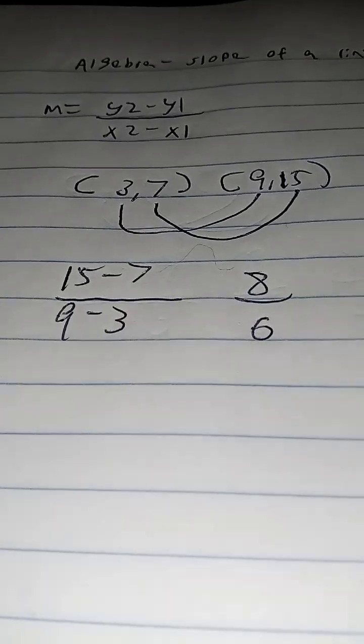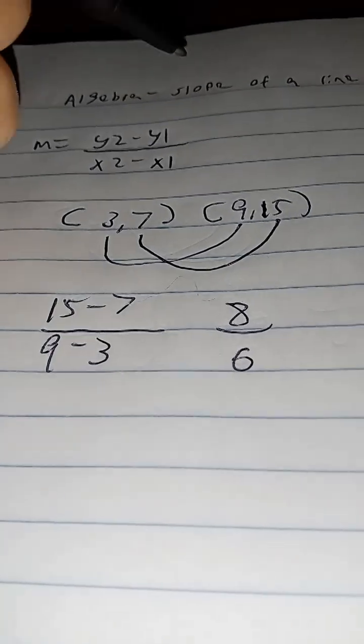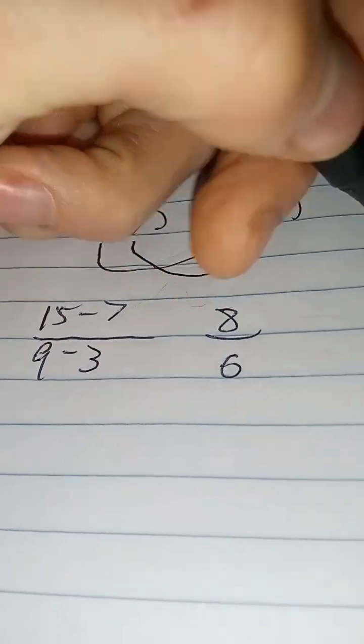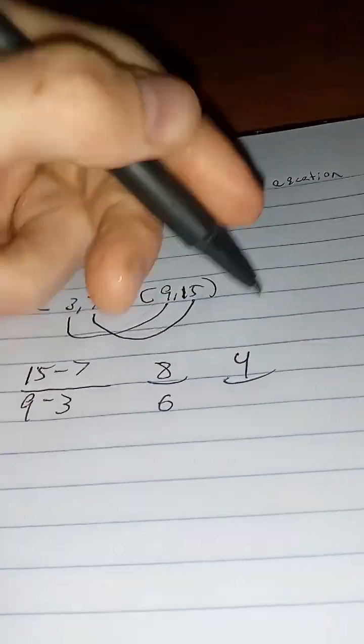What we have to do is simplify it further. So we know that 2 can go into 8. So 2, 4, 6, 8 - that's 4. And then 2, 4, 6 - that's 3.